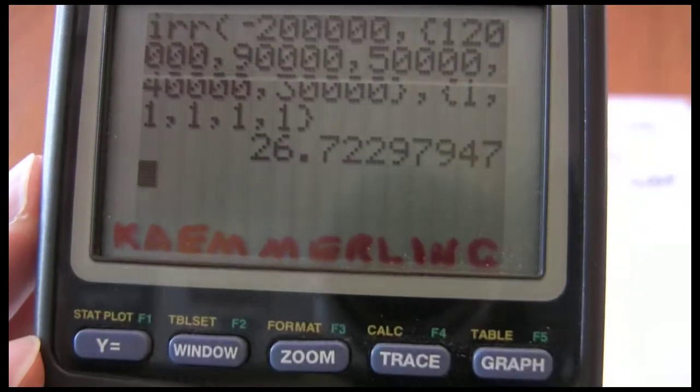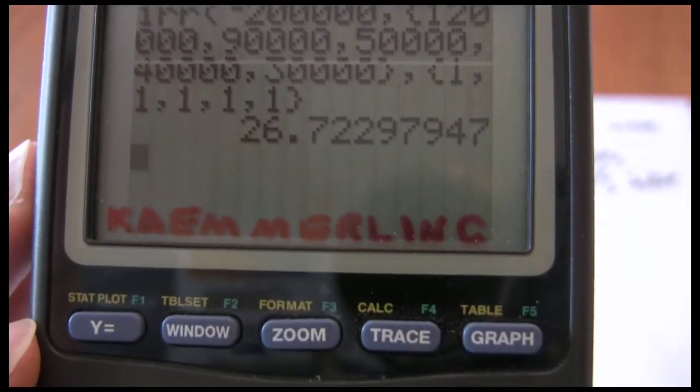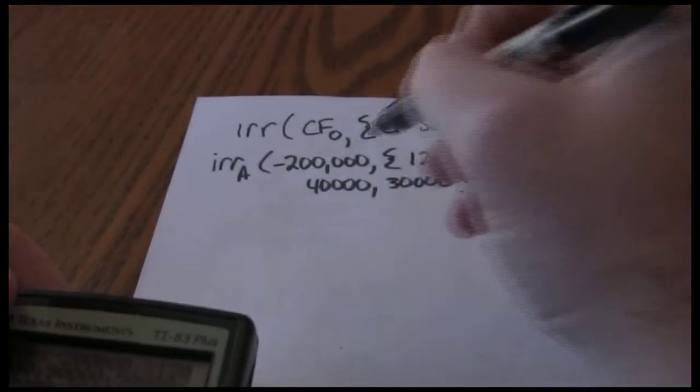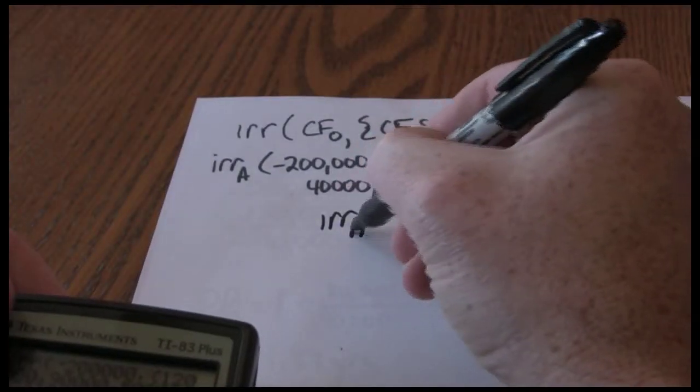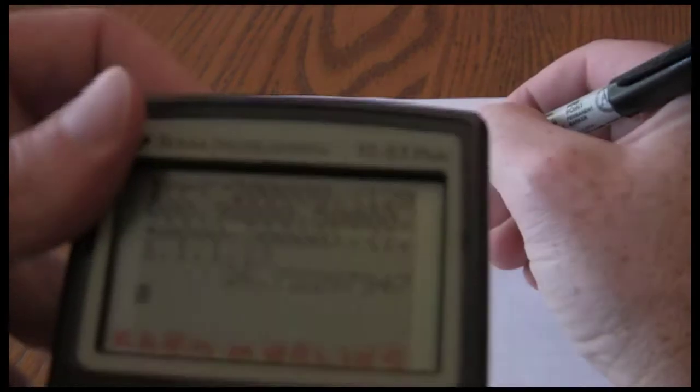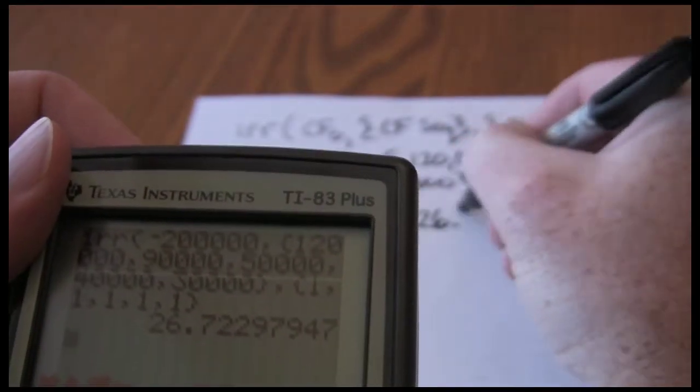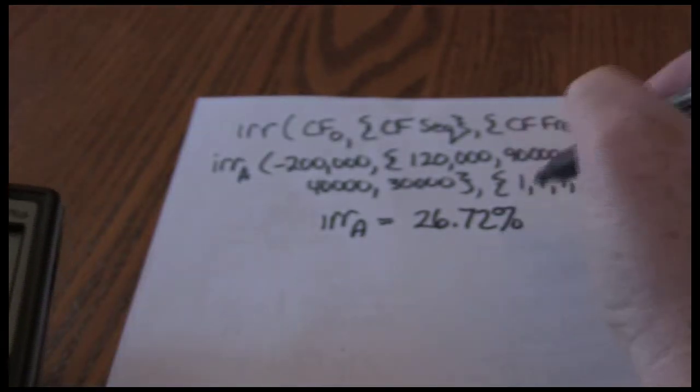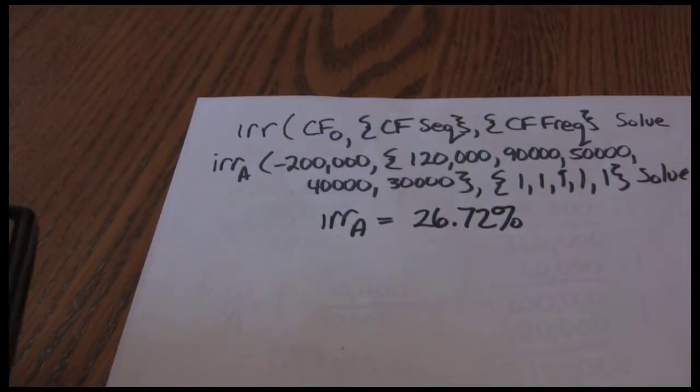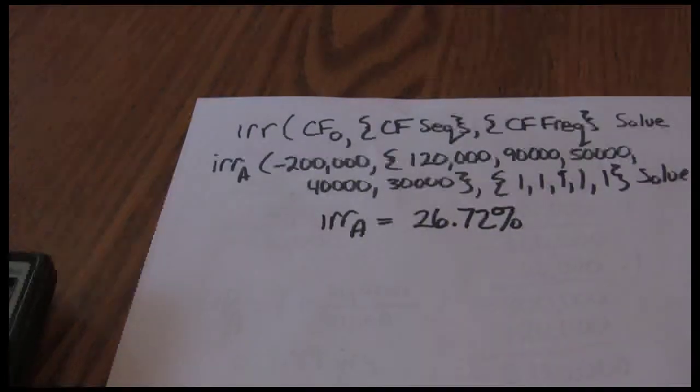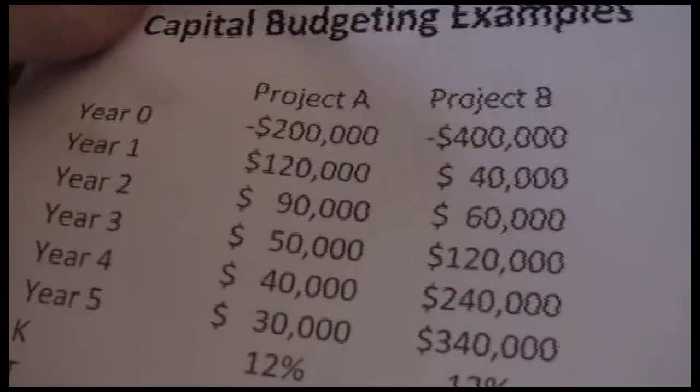We solve or get an internal rate of return of 26.72%. Now we can do the internal rate of return for project B.